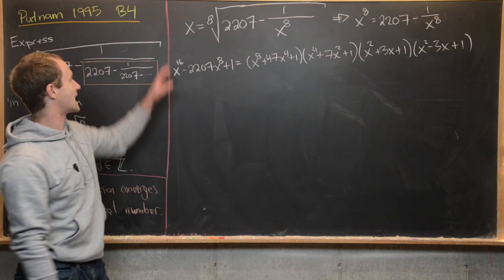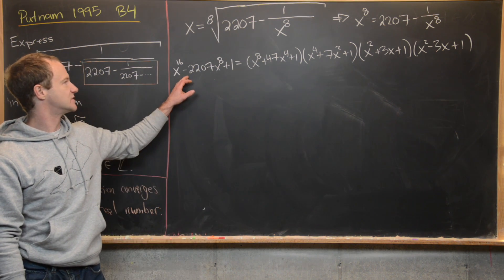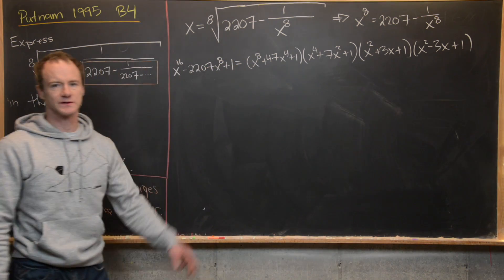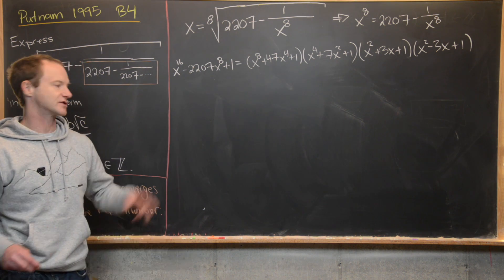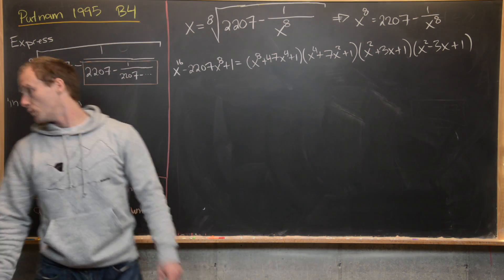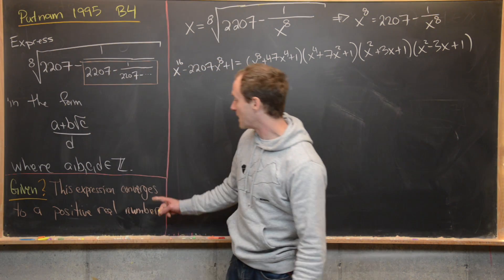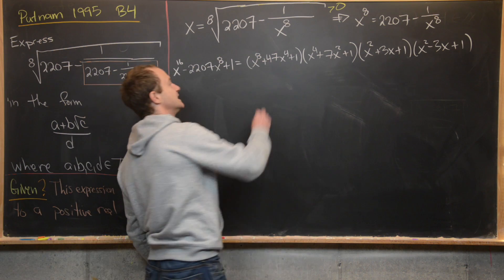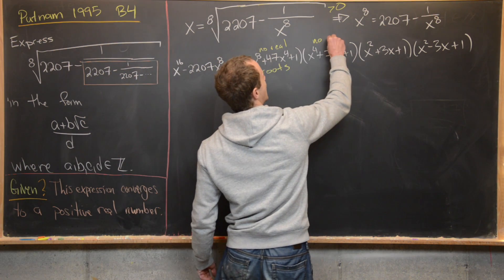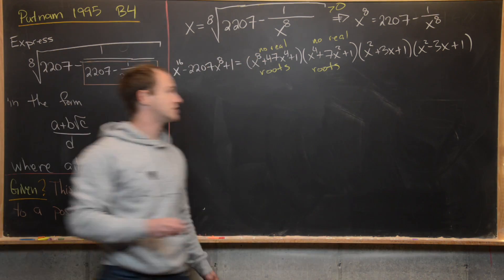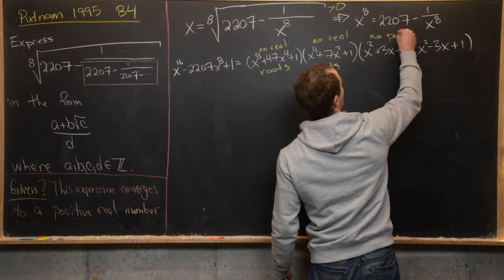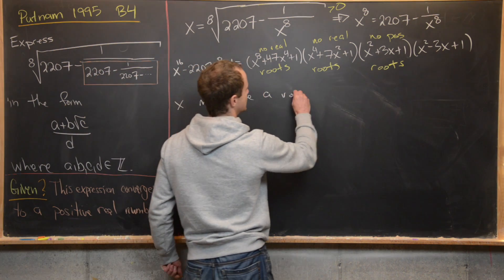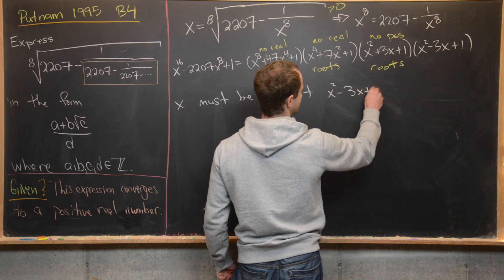On the last board we constructed a degree-16 polynomial that x must be a root of, then factored it into a degree-8, two degree-4, and two quadratic polynomials. Now, using the fact that x is a positive real number: the degree-8 factor has no real roots, the degree-4 factor x to the fourth plus 7x squared plus 1 has no real roots, and it's not hard to check that x to the fourth minus 7x squared plus 1 has no positive roots. That means x must be a root of the leftover quadratic x squared minus 3x plus 1 equals 0.